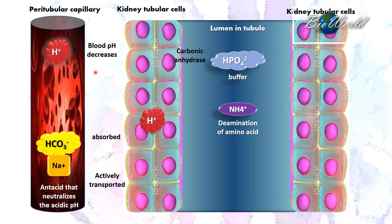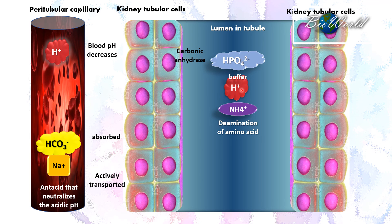Meanwhile, the kidney tubular cells will have a higher concentration of hydrogen ions, which will make the cells become acidic. What happens next is that the hydrogen ions will diffuse into the lumen of the tubule, where they will combine with the hydrogen phosphate ions as well as the ammonium ions to form ammonium salts. The ammonium salts will then be excreted along with urine.